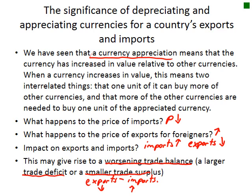When we talk about a worsening trade balance — exports minus imports — just because we've had a currency appreciation doesn't mean we've gone from a net exporter to a net importer. It simply means exports will go down and imports will go up, resulting in either a larger trade deficit, or if we had a surplus to begin with, a smaller trade surplus. Please don't assume we've automatically become a net importer with a trade deficit — that may not be the case.